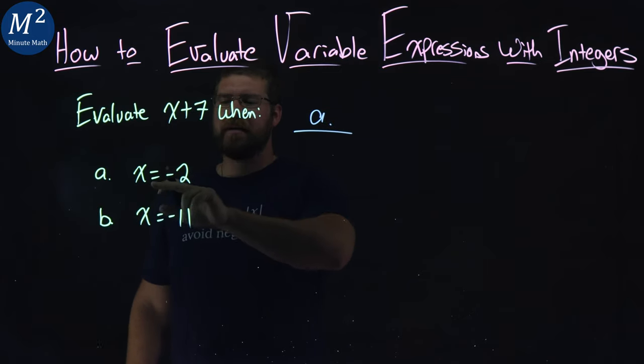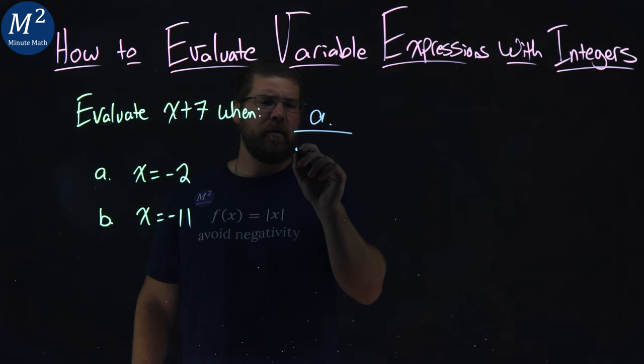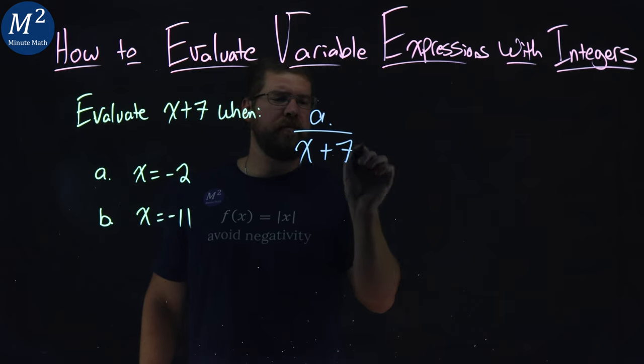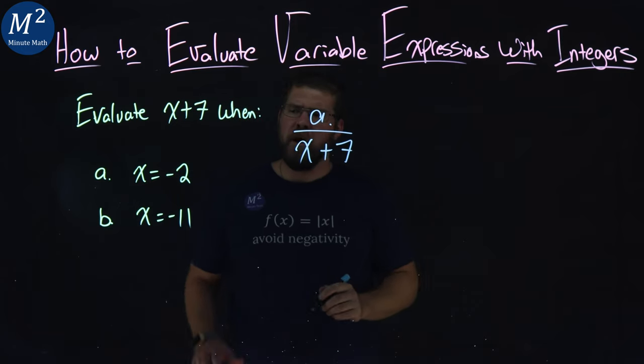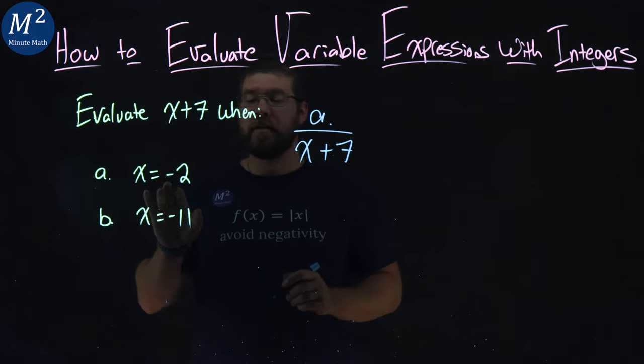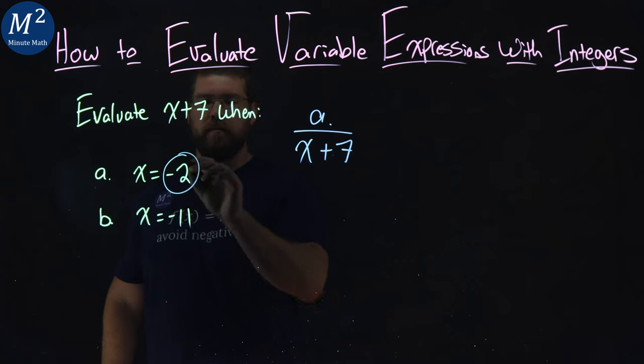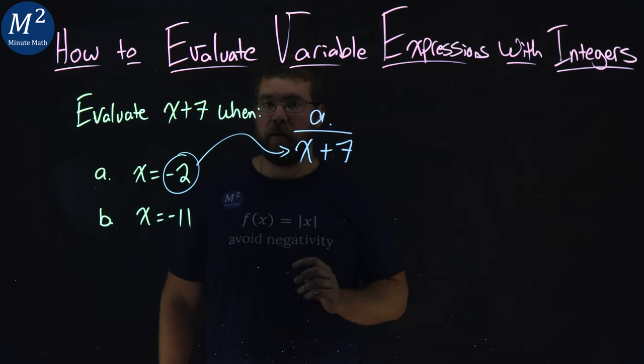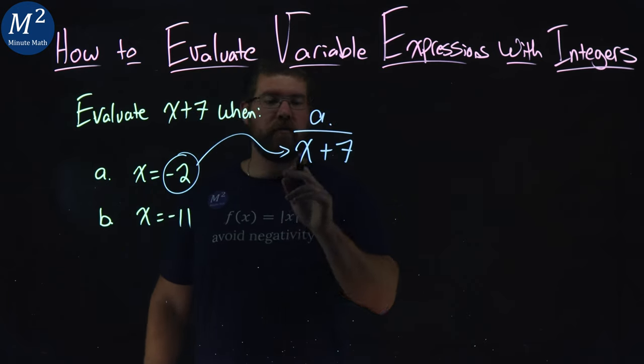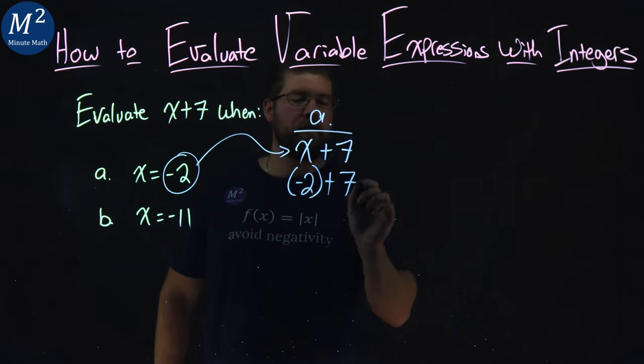Evaluate x plus 7 when x equals negative 2. I'm going to start with x plus 7 here. When they tell us to evaluate when x equals negative 2, they want us to substitute negative 2 in for x. So negative 2 goes in for x, negative 2 right here, plus 7.